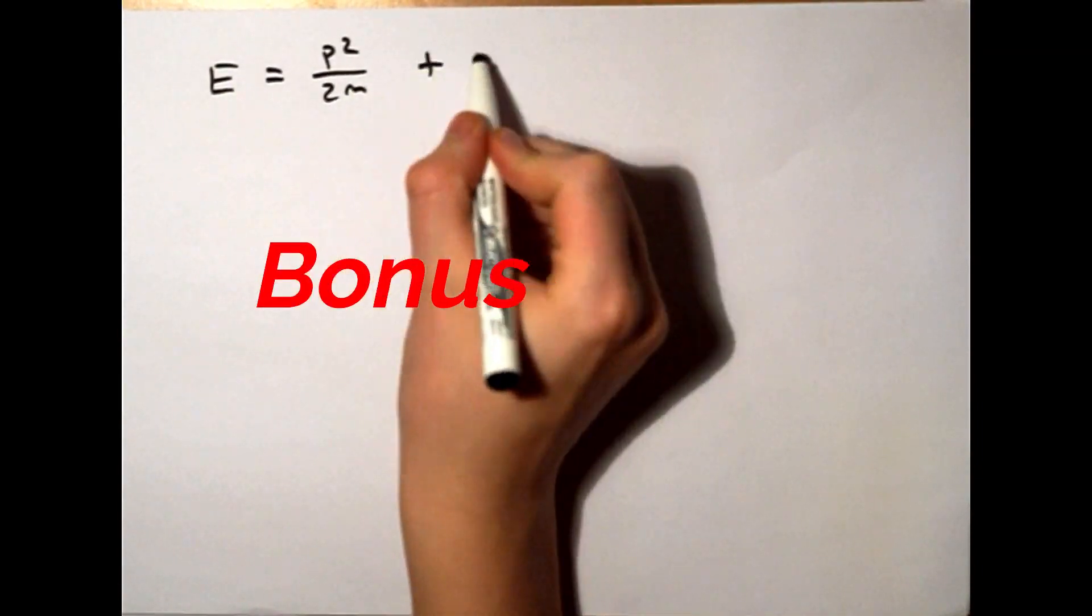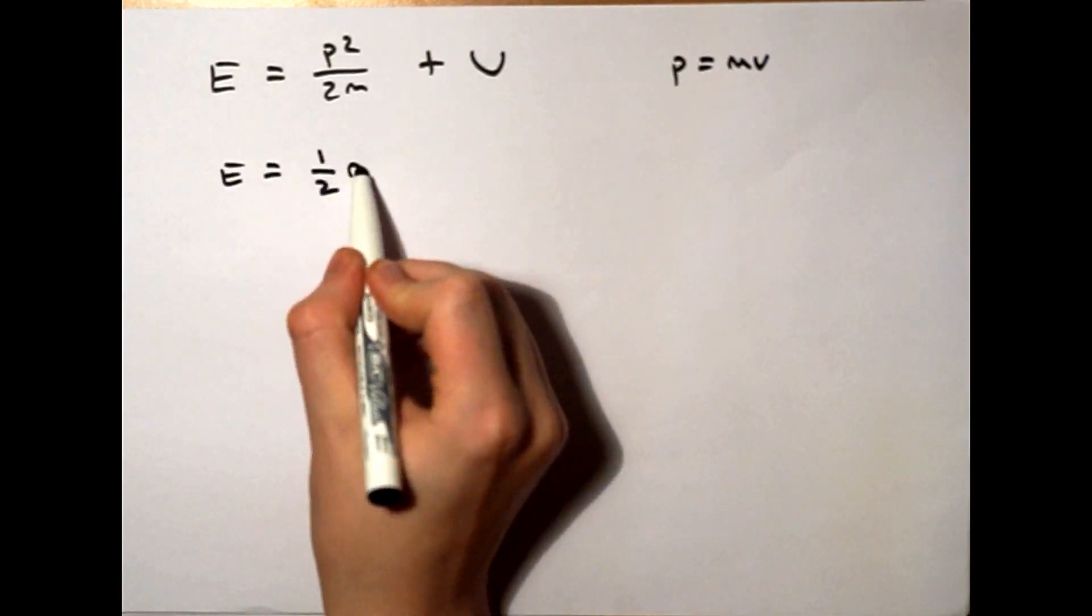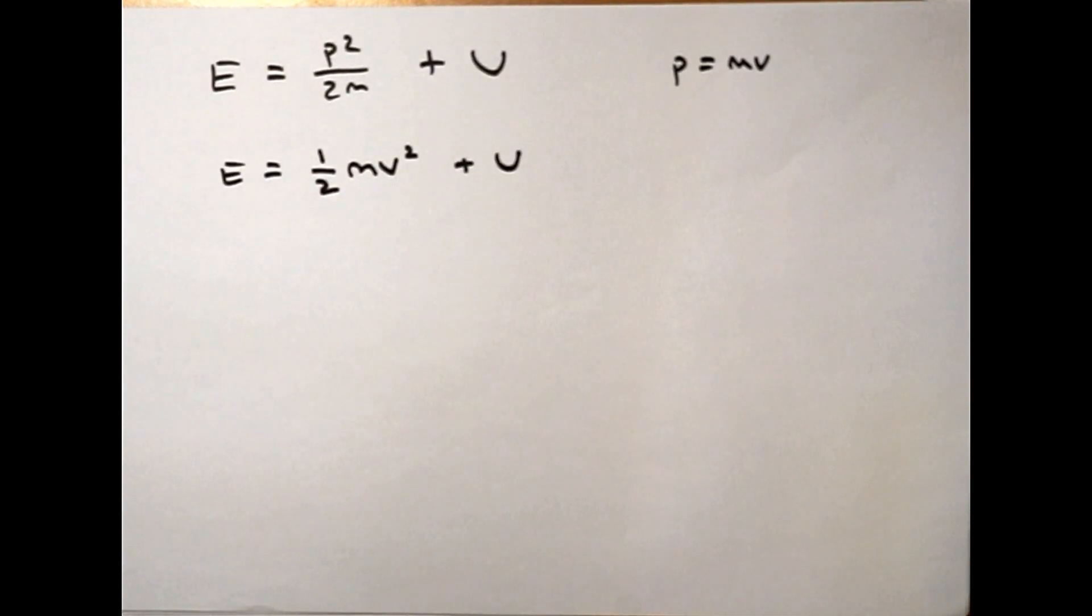If we substitute in mass times velocity for momentum, we find the familiar equation for the total energy in the system.